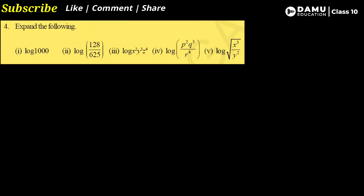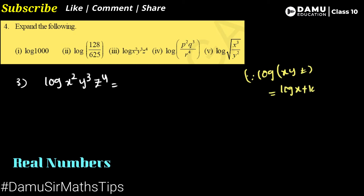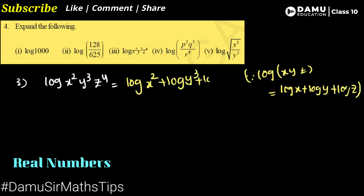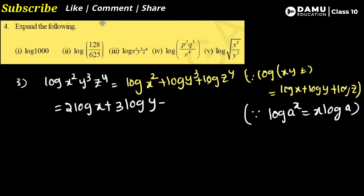Move on to the third one: log(x²y³z⁴). We need to remember the formula: log(xyz) = log x + log y + log z. Don't get confused — if no base is written here, none is written on the other side either. So this expands to log(x²) + log(y³) + log(z⁴).